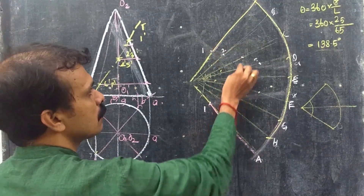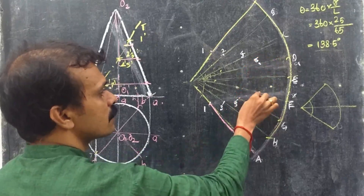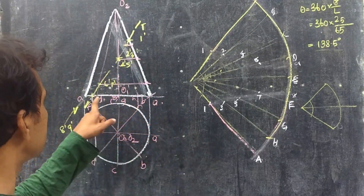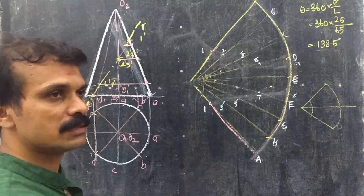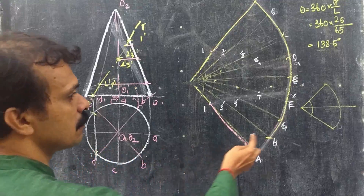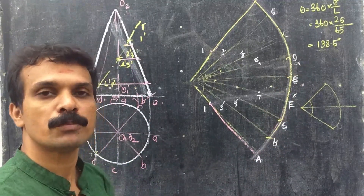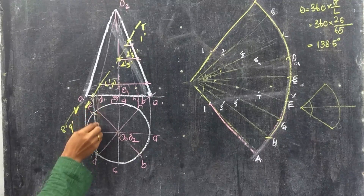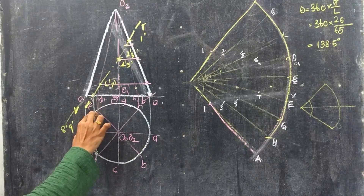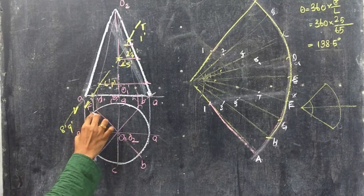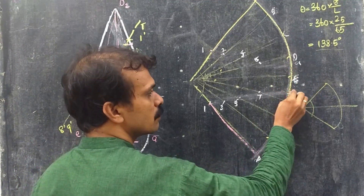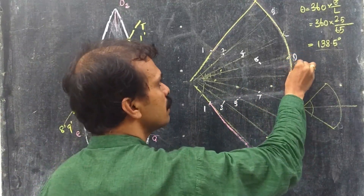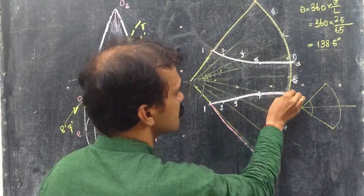Mark points 1 through 7 on the corresponding generators. For the remaining two points, 8 and 9, which lie on the base between generators F and D — draw a vertical line from those points to the top view to intercept the base. Take the distance from E towards F and mark it to get point H. Connect all these marked points as a smooth curve, since it is a cone.